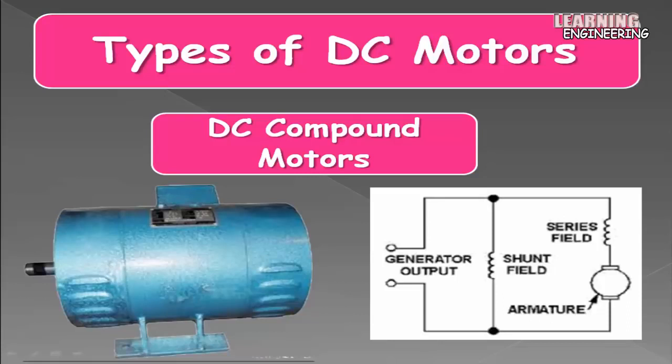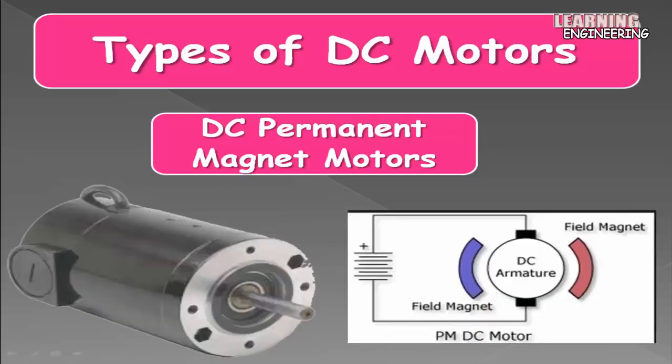DC compound motors: the DC compound motor is a combination of the series motor and the shunt motor. It has a series field winding connected in series with the armature, and a shunt field winding in parallel with the armature. This combination allows the motor to have the high torque characteristics of the series motor and the regulated speed characteristics of the shunt motor.